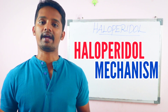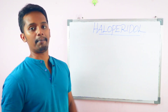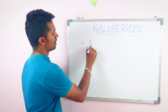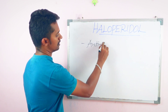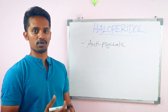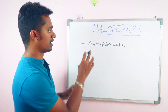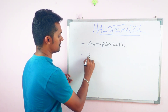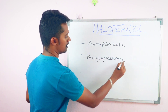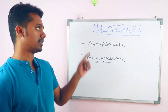In this video, we will talk about the mechanism of action of haloperidol. Haloperidol is an anti-psychotic drug. What category does this drug belong to? It belongs to the Butyrophenone category. One of the drugs in the Butyrophenone category is haloperidol.